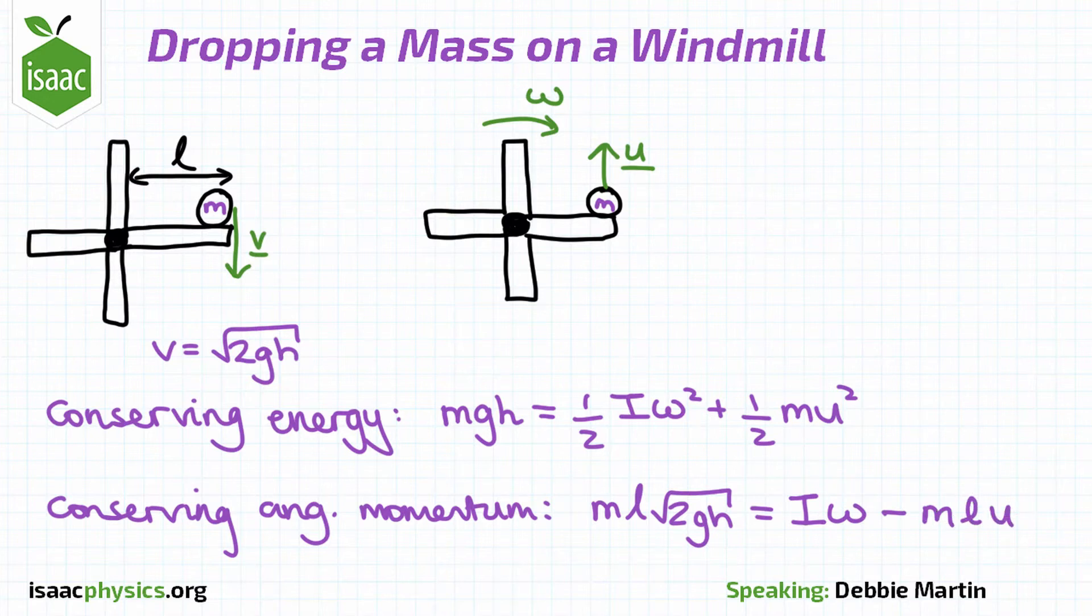Once we have substituted in our expression for the moment of inertia of the rod, we will obtain two equations with two unknowns, U and omega. By making U the subject of one of the equations and substituting this into the second equation, we can find omega.